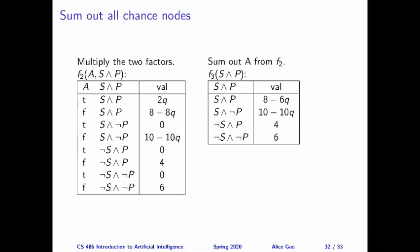F3 should look very familiar to you, because it's already in the form of the expected utilities that we calculated before. You can compare these expressions to the expressions we got before, and they are exactly the same. So the variable elimination algorithm leads us to the same point right before we're supposed to make a decision.